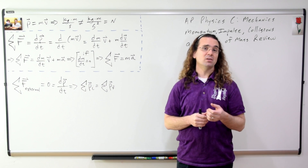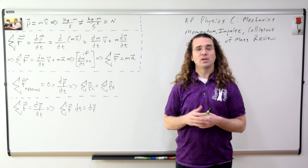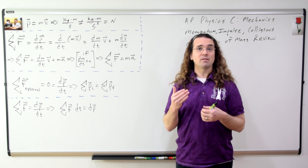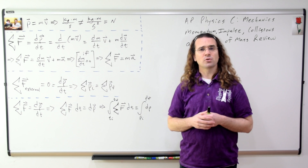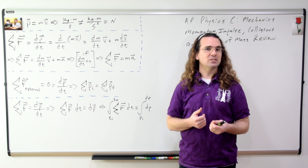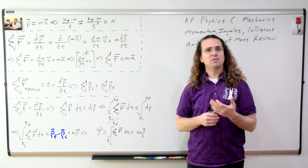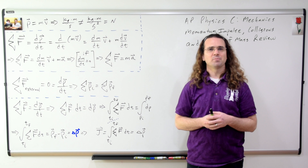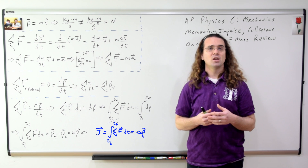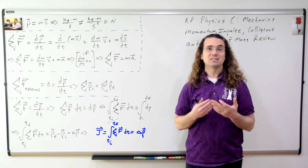Let's derive the equation for impulse, often called the impulse-momentum theorem. Starting with the net force equation, we rearrange to get net force times dt equals dp, then take the definite integral of the whole equation. The limits with respect to time go from time initial to time final, and the limits with respect to momentum go from momentum initial to momentum final. The result is that the change in momentum equals the definite integral from time initial to time final of the net force with respect to time, which is defined as impulse. The symbol for impulse is a capital J, and impulse, just like momentum, is a vector.